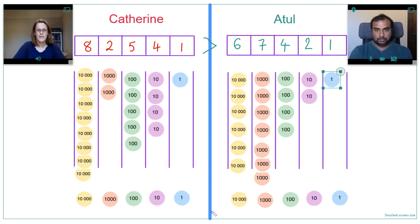Okay, so from here we can see really clearly that my eight is worth 80,000 and your six is worth 60,000. That's how we can compare the numbers.